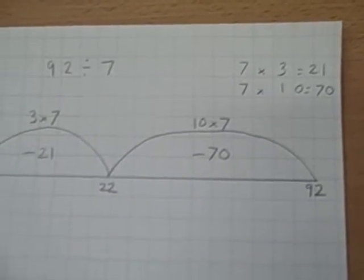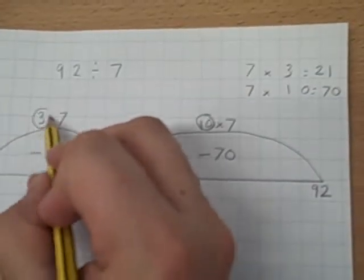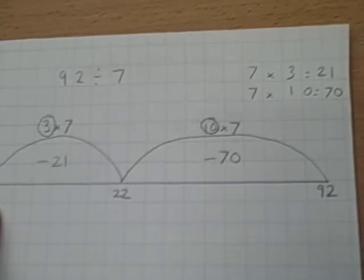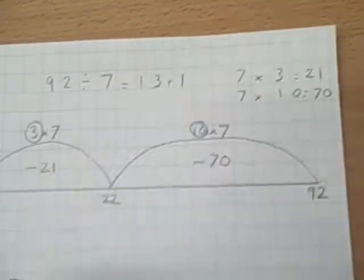So how many chunks have we taken? 10 plus 3 is 13. Remainder 1. So our answer will be 13 remainder 1.